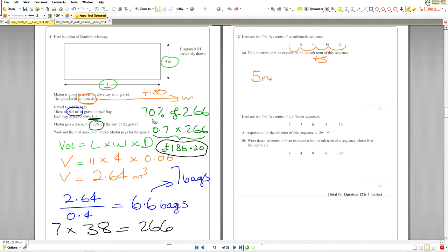If it goes up in fives, that means the pattern will contain 5n. Now let's try it for the first term. So this here, n equals 1.